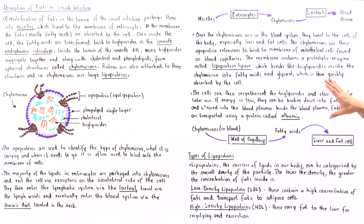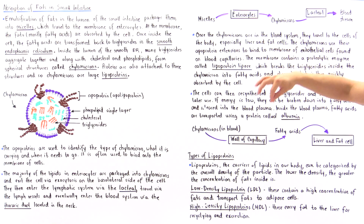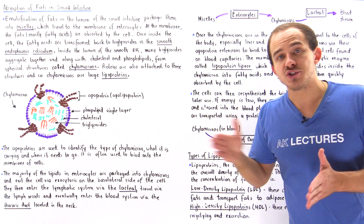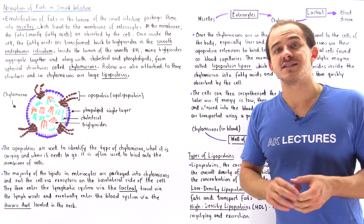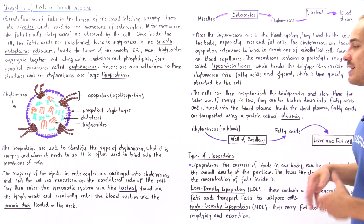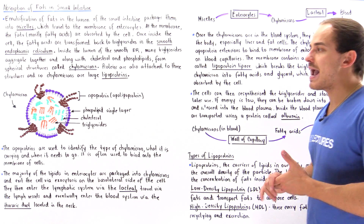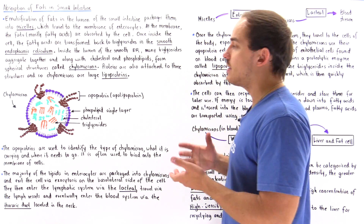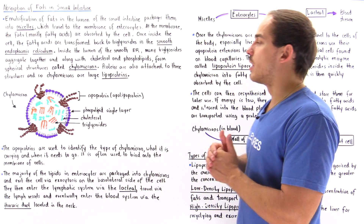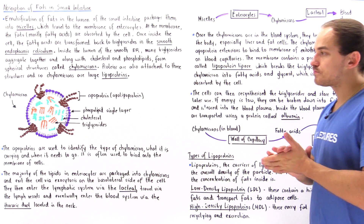But once those fats end up in the target liver and fat cells and are released into our blood system again, they travel in our blood via albumin. Albumin is the protein carrier that carries fatty acids inside our blood plasma.